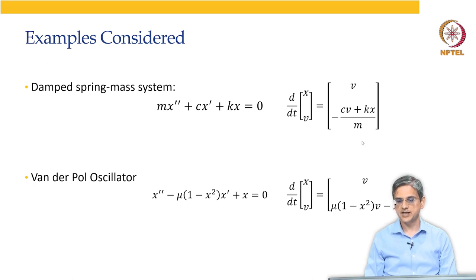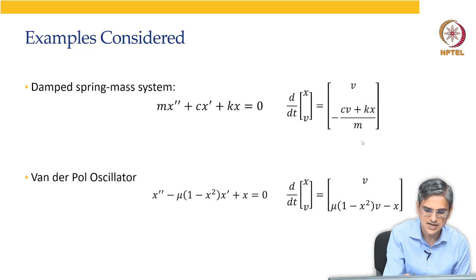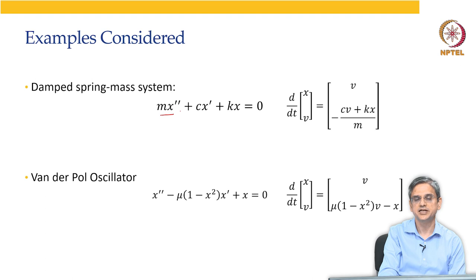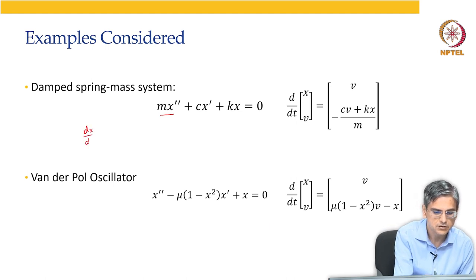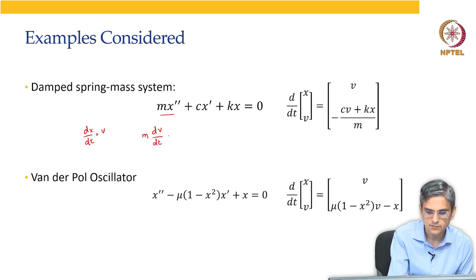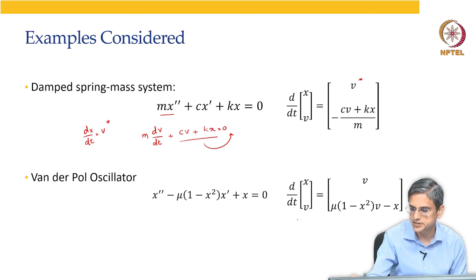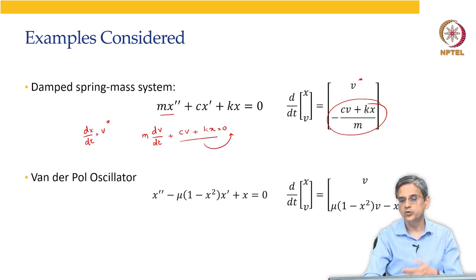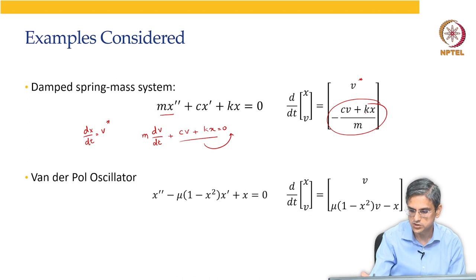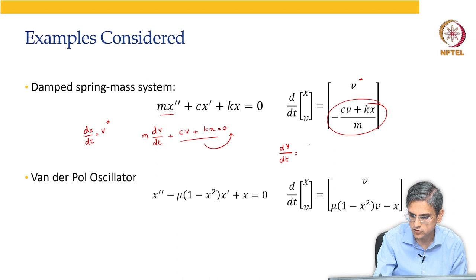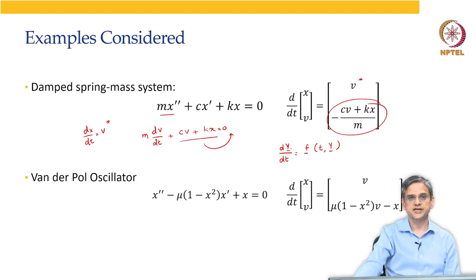What have we covered so far? We have covered two examples, the mass spring damper system and the Van der Pol oscillator. Both are examples of second order ODEs because you have d square x by dt square term. The second order ODEs can be converted into first order ODEs by writing DX by dt equal to V and the second equation is going to be DV by dt multiplied by M plus CV plus Kx equal to 0. We can rearrange this to get DY by dt equal to F bar of T comma Y bar. Same thing was the case with Van der Pol oscillator as well.